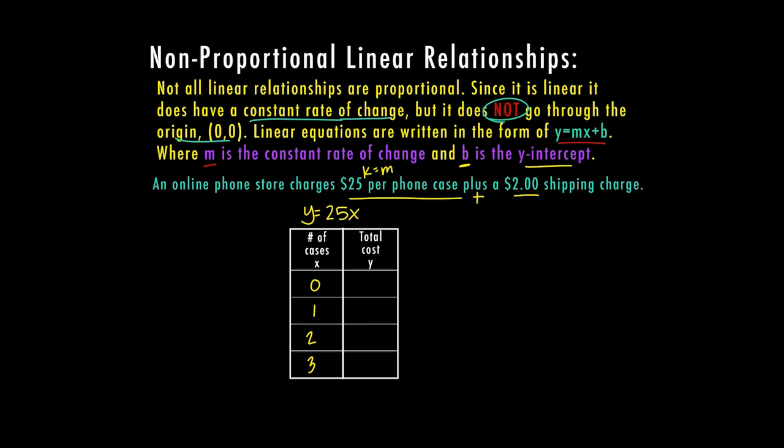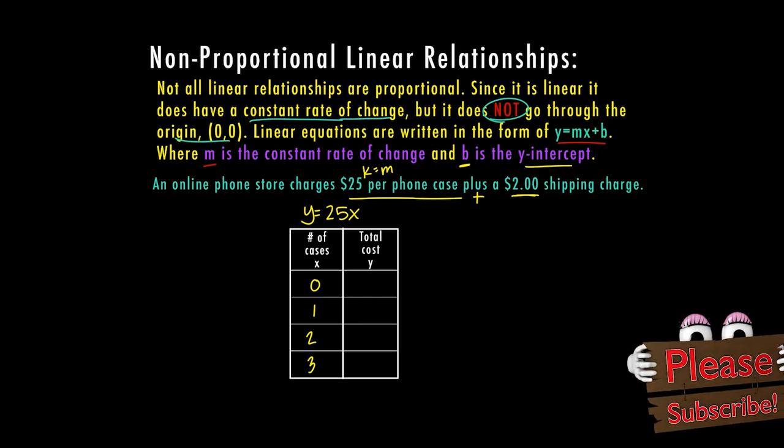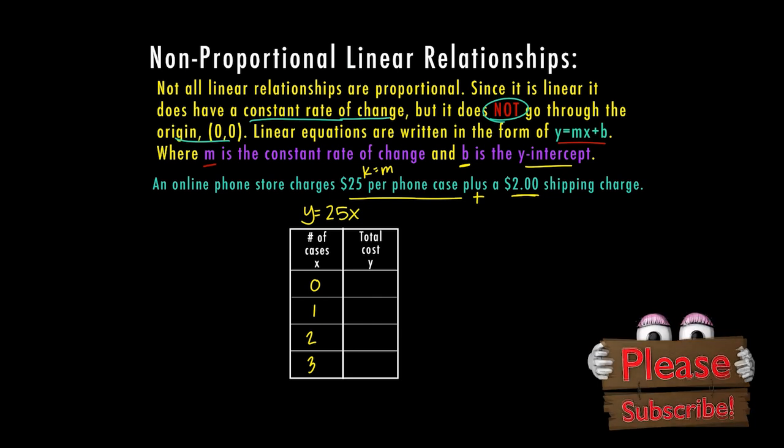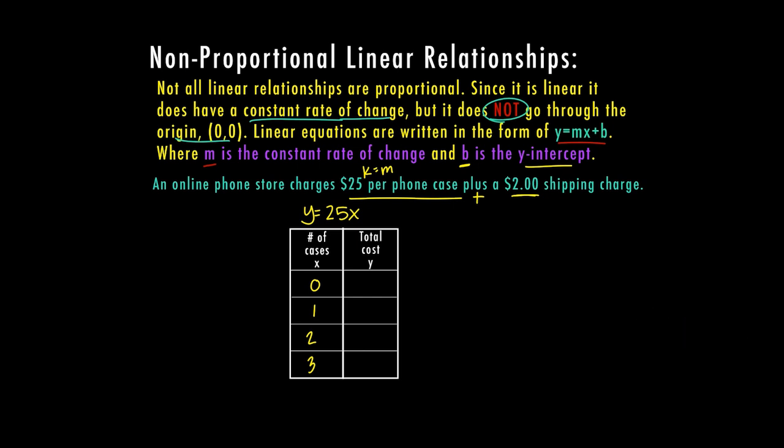But now we have this extra charge. We also have to pay a shipping charge of $2. That means that if I'm buying zero, which it's an online store, so I don't have to buy anything. But the moment I put something in my cart, there's going to already be that $2 shipping charge. That's going to be your add-on amount, that's going to be our B.